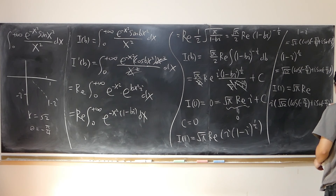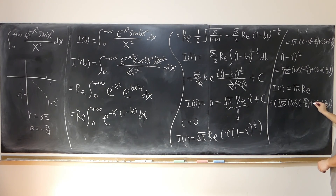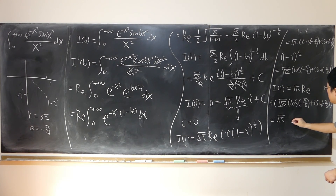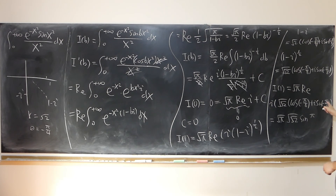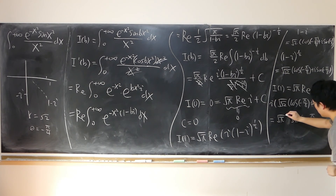Now what's the real part of i times this expression? The imaginary part of the bracket contributes i squared times 2^(1/4) times sine(−π/8), which equals negative 1 times 2^(1/4) times (negative sine(π/8)), giving a positive contribution. So I(1) equals square root of pi times 2^(1/4) times sine(π/8), which we can write as the square root of (π times square root of 2) times sine(π/8).